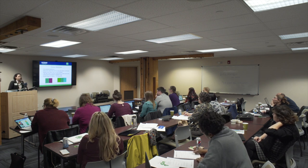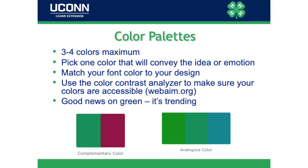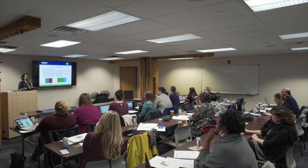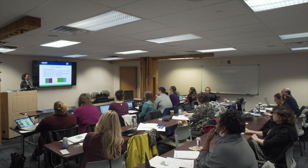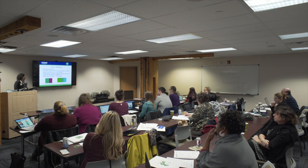On color palettes: three to four colors maximum. Pick your first color — in your case it will probably be 4-H green — then complement your color based off of that. Color should convey emotion. At UConn we use Pantone 289C, which is navy blue, as our key university color. You may end up pairing that with your 4-H green. The good news is that green is a trending color this year with Canva, so those natural colors are in — you'll be on point with whatever you're designing.